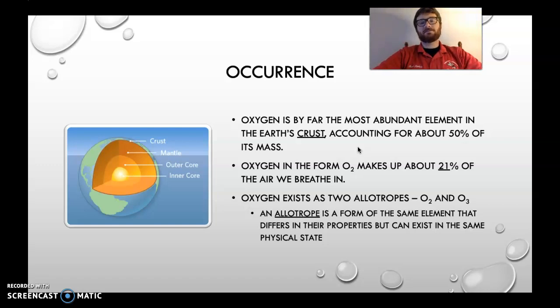Oxygen, the occurrence. It is the most abundant element in the Earth's crust, accounting for about 50% of the mass of the crust in the Earth. That's a lot. The oxygen we breathe in is in the form of O2, makes about 21% of the air we breathe in.